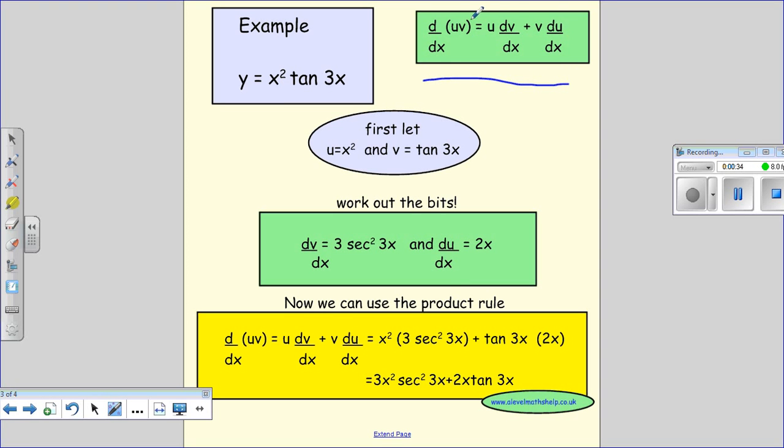The product rule says that if you're going to differentiate something times something, then you take the first thing, leave it alone, times it by the differential of the second thing, plus the second thing left alone times by the differential of the first thing.